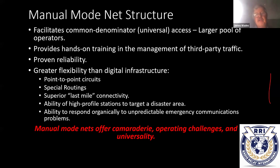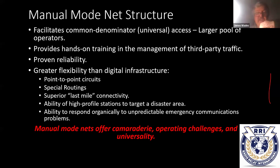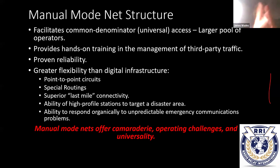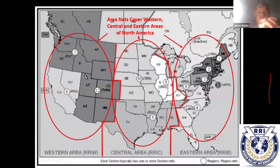With manual modes you can have superior last-mile connectivity between an EOC and the disaster area. It's a little easier for high-profile stations to target a disaster area, change frequency to avoid interference, and respond organically to unpredictable problems in the communications environment — interference, fading, propagation anomalies. One of the great benefits of manual mode net structures is the fun and camaraderie of actually interacting one-on-one with other net operators.